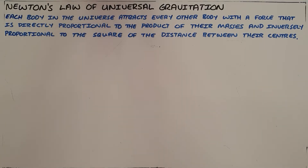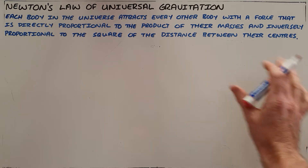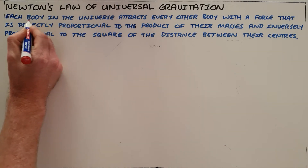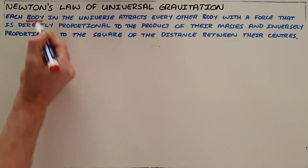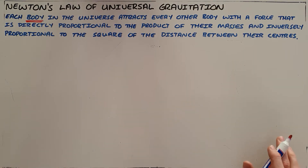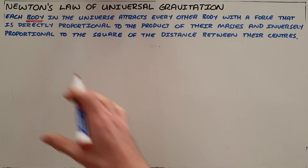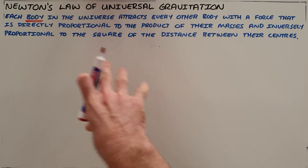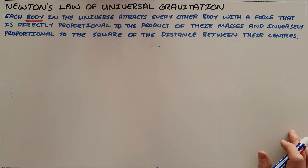Newton's law of universal gravitation states that each body in the universe attracts every other body with a force that is directly proportional to the product of their masses and inversely proportional to the square of the distance between their centers. Important to note that each body referred to here is a body that has mass. So basically there's a force of attraction that exists between every two objects of mass within the universe.